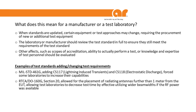When a test standard gets updated, what does that mean for you as a manufacturer or test laboratory? Certain equipment or test approaches may change, requiring the purchase of new equipment. For example, if you were a MIL-Standard 461 test house and they include lightning and electrostatic discharge, and you don't have any of that equipment, you'll have to go get it — and it can be a major investment. If you were already testing DO-160 and other things, you may already have it, but you need to ensure your equipment meets the requirements of the new standard.